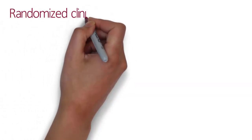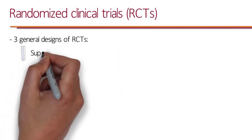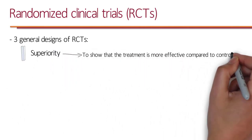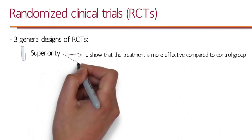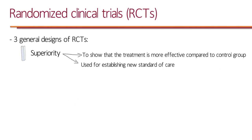Let's take a look at randomized clinical trials. There are three general designs of RCTs. The first one is a superiority trial. The point of a superiority trial is to show the treatment in the intervention group is more effective or superior compared to the control group. This design is used for establishing new standard of care, meaning that in the absence of standard of care, it's ethical to give the control group a placebo.